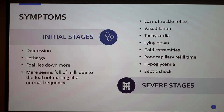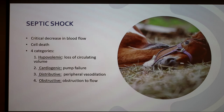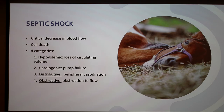Septic shock is the fatal part of this disease. It's a critical decrease in blood flow which causes rapid cell death, and then rapid cell death causes death of the animal. There are four categories of septic shock: hypovolemic, which is a loss of circulating volume; cardiogenic, which is pump failure and usually occurs when it attacks the cardiovascular system; distributive, which is peripheral vasodilation; and obstructive, which is coagulation of the intravascular system.